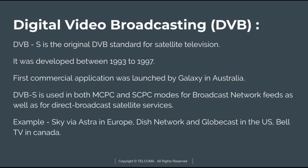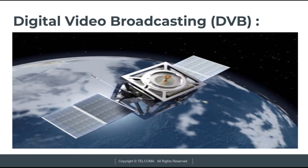DVB-S is used in both MCPC (Multiple Channel Per Carrier) and SCPC (Single Channel Per Carrier) modes for broadcast network feeds as well as for direct broadcast satellite services. Examples of DVB include Sky via Astra in Europe, Dish Network and Globecast in the US, and Bell TV in Canada. This satellite is shown providing DVB services to a worldwide network.